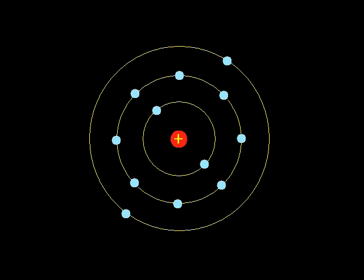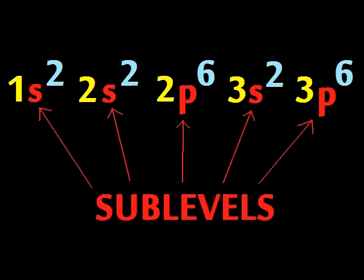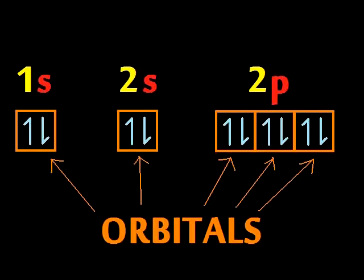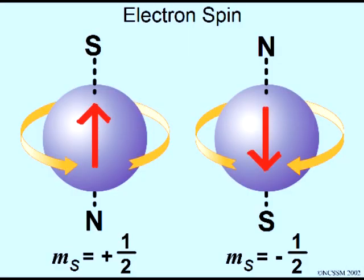Electrons are found outside the nucleus. They zip around in energy levels, which are made up of sublevels, which can then be broken down into orbitals — two electrons per orbital, each one with opposite spin.